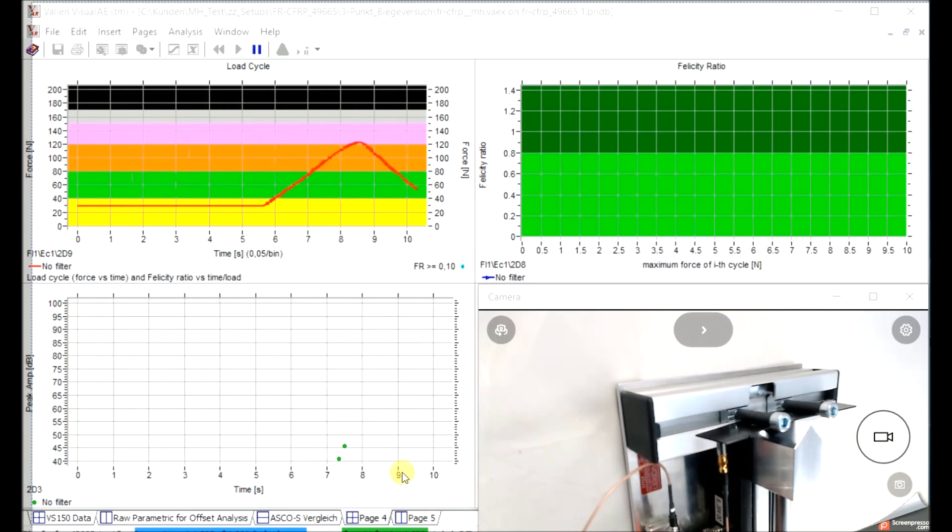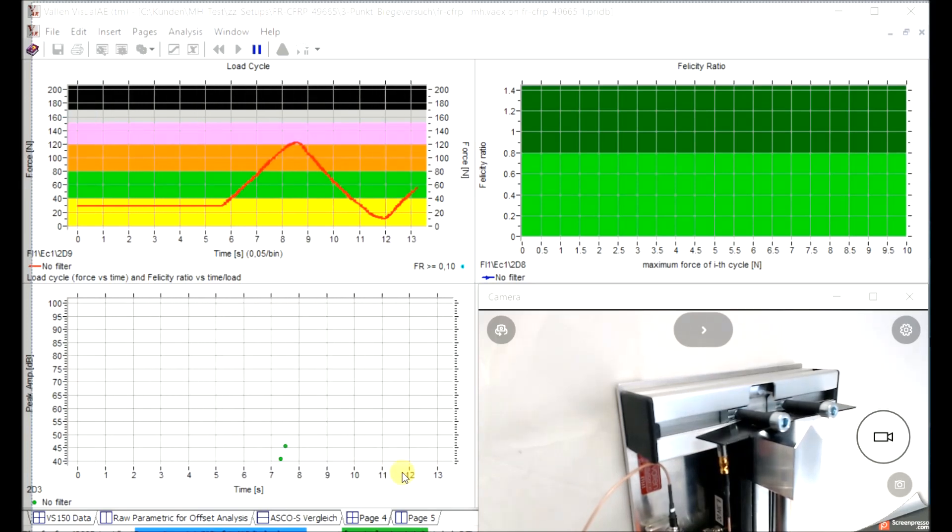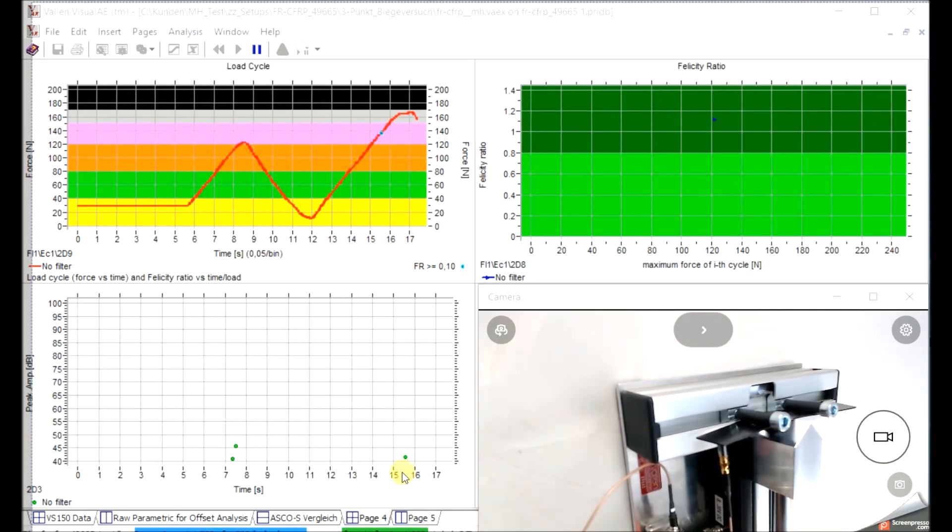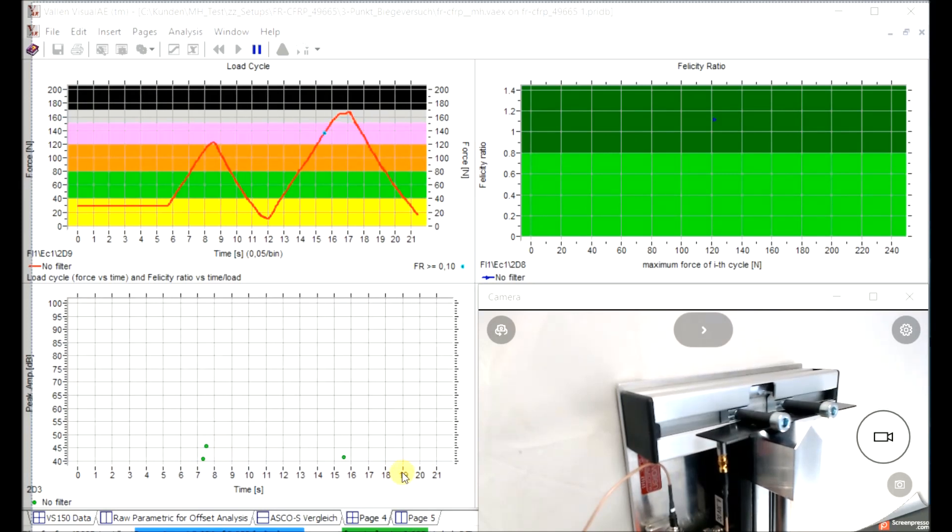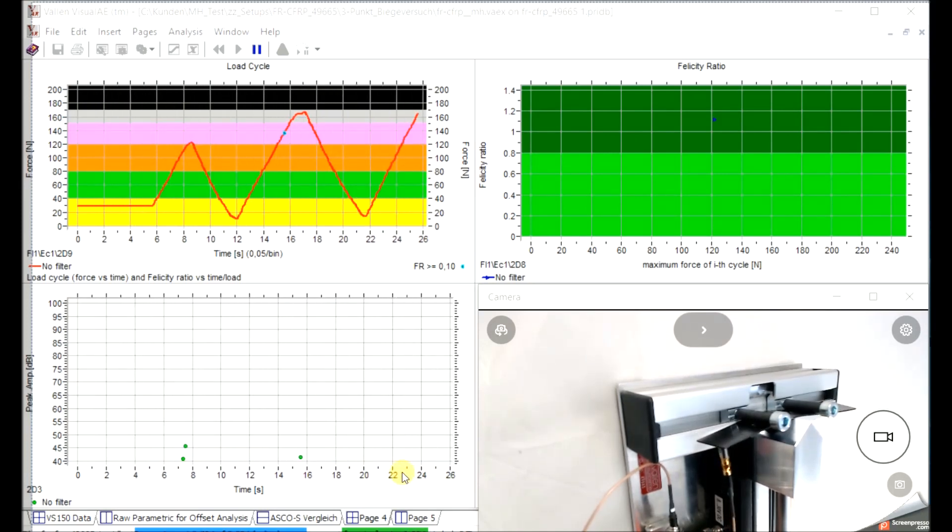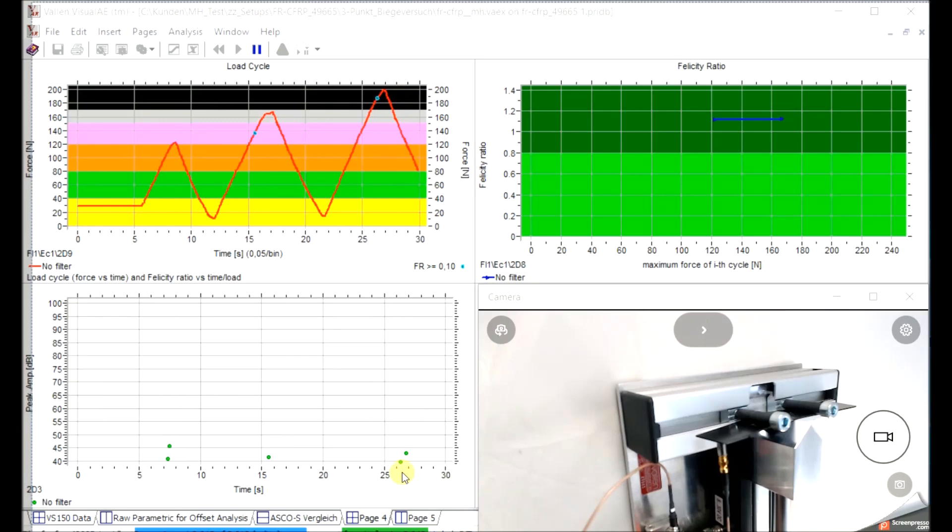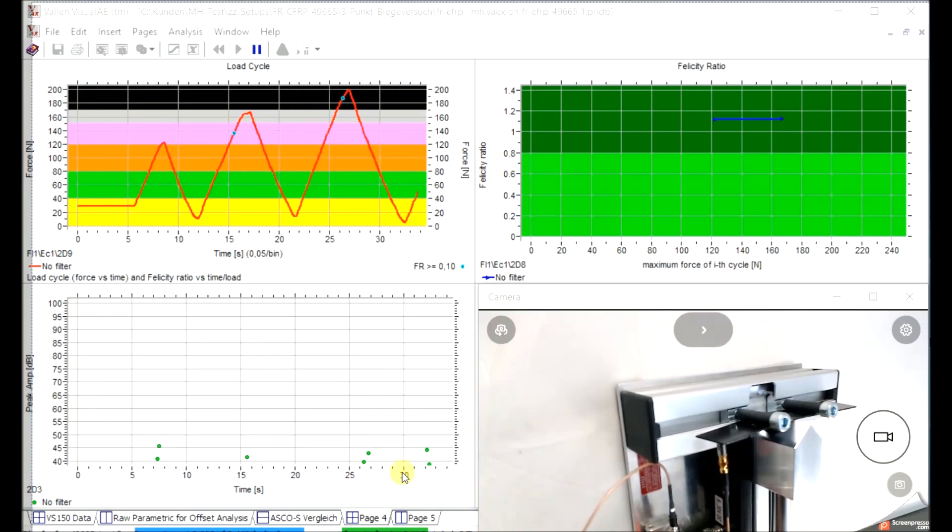The first result we look at is from an undamaged sample. The measured Felicity Ratio is above 0.8.